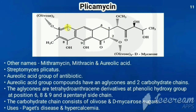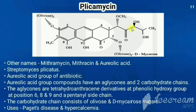Next is plicamycin. Its structure is a fusion of three rings, numbered one to ten. The first portion has a ketone, the second has a glycosidic (ether) linkage connected to two molecules of olivose and D-mycarose, the third portion is a five-carbon pentanyl side chain, the sixth portion also has a glycosidic linkage with two molecules of olivose, the seventh has a methyl group, and the eighth and ninth have hydroxy groups.